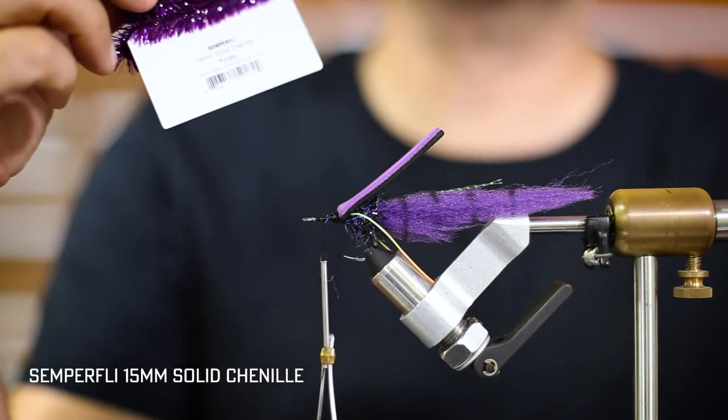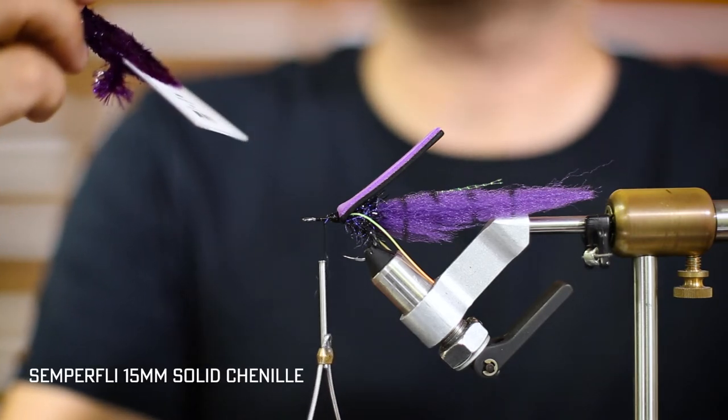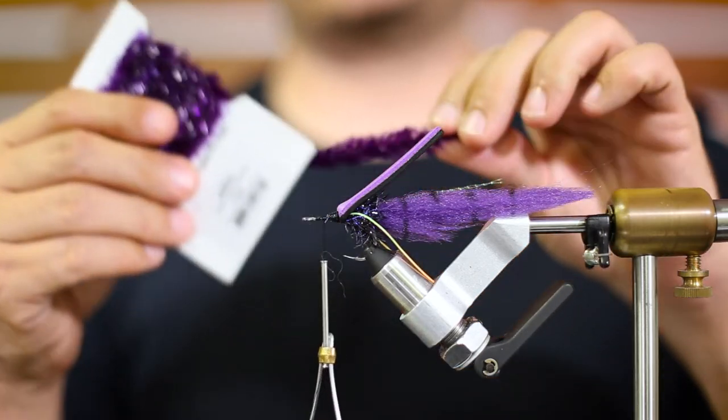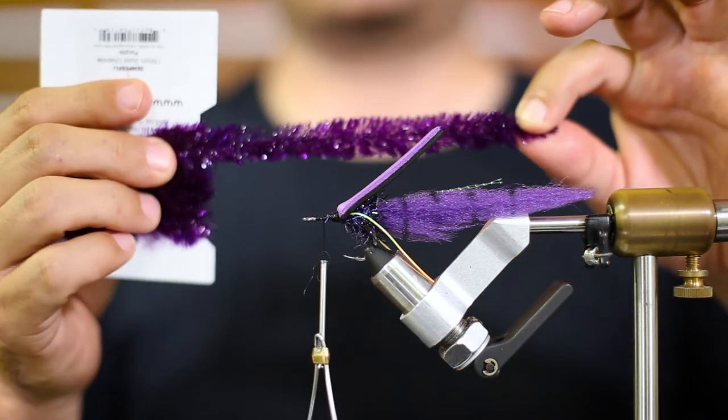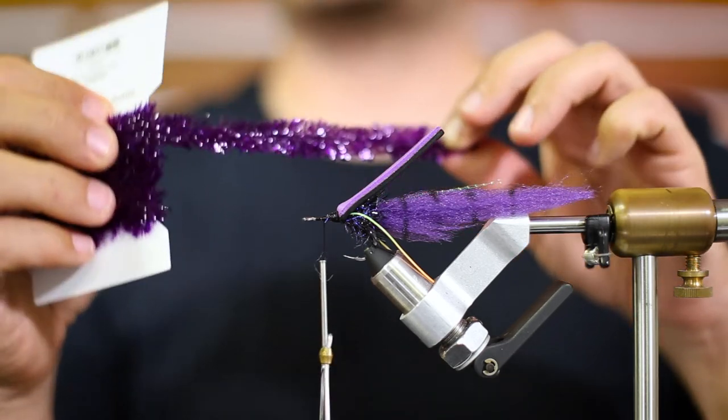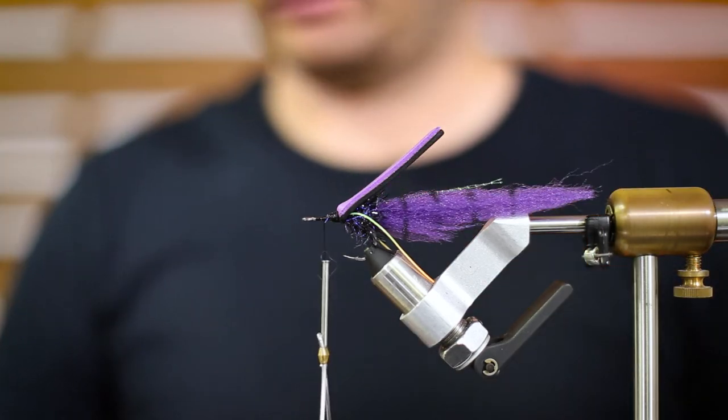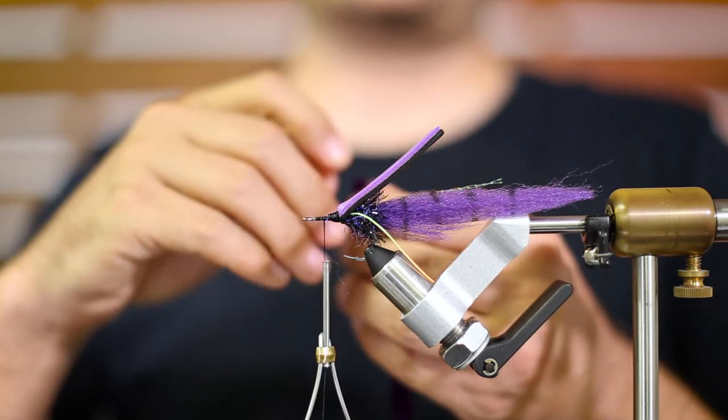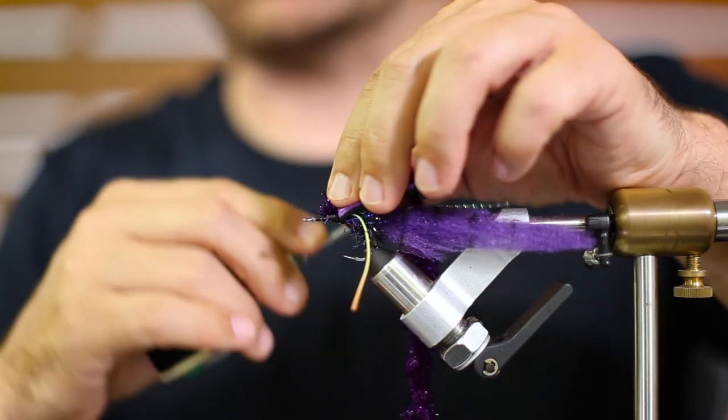Next step, we're going to be using the Simferfly 15mm solid chenille in purple. I'm just going to use about this much. You just only need about to get a couple of wraps in there.